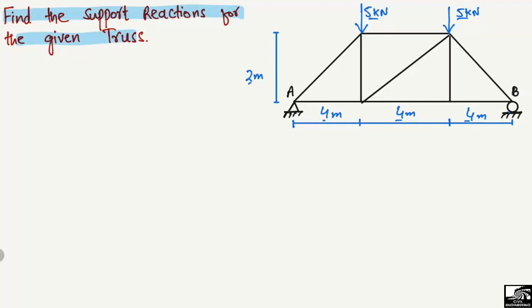The truss is supported by a hinge support at point A and a roller support at point B. The hinge at A can take vertical and horizontal loads, while the roller at B can only take vertical loads. Since there is no horizontal load acting on this truss, the horizontal reaction RAX will be equal to zero.